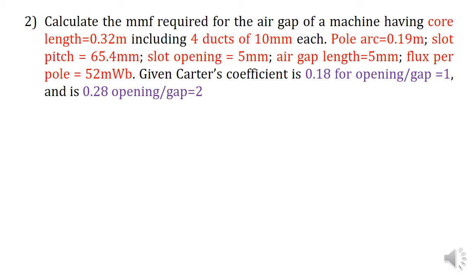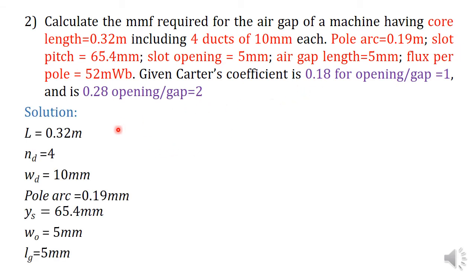The second question: calculate the MMF required for the air gap of a machine having core length equal to 0.32 meter, including 4 ducts of 10 mm each. Pole arc is equal to 0.19 meter. Slot pitch YS is equal to 65.4 mm. Slot opening is 5 mm. Air gap length LG is 5 mm. Flux per pole is 52 milliweber. Carter's coefficient is given as 0.18 for opening per gap equal to 1, and 0.28 for opening per gap equal to 2.